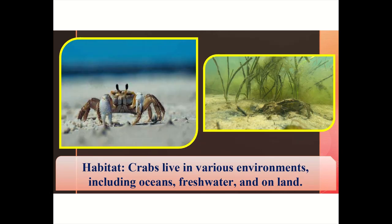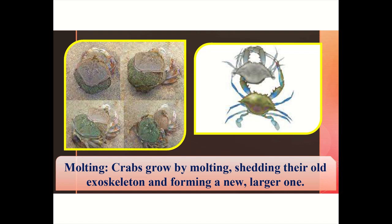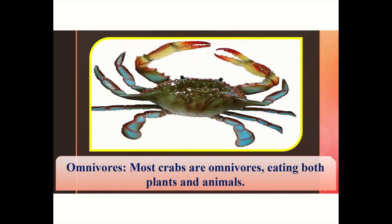Habitat: crabs live in various environments including oceans, freshwater, and on land. Molting: crabs grow by molting — shedding their old exoskeleton and forming a new, larger one. Omnivores: most crabs are omnivores, eating both plants and animals.